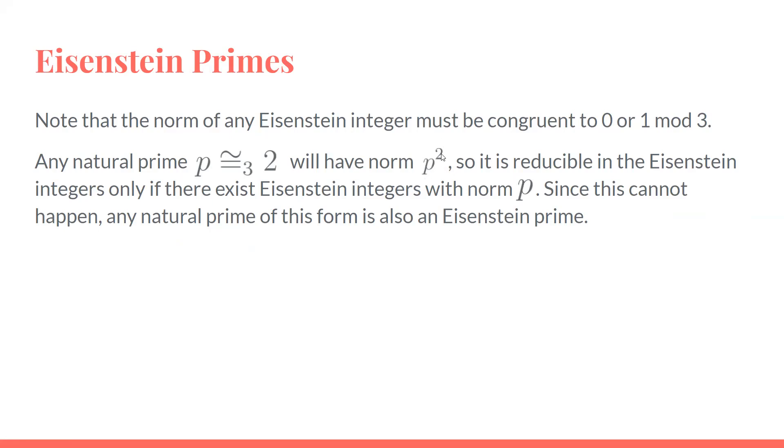Since we know that any prime number will have norm p², we're going to particularly look at those primes that are congruent to 2 mod 3. Since this has norm p², the only way it can be reducible is if the product of two Eisenstein integers equals p². That means they both have to have norm p, because otherwise one of them would be a unit. But since the norm of anything can't be congruent to 2 mod 3, this allows us to conclude that regular prime numbers that are congruent to 2 mod 3 do still count as Eisenstein primes.